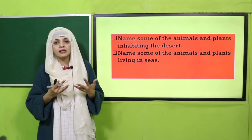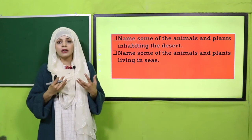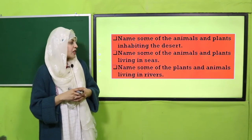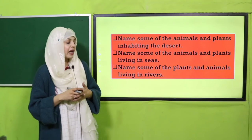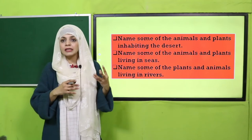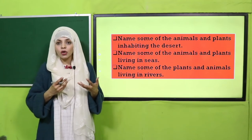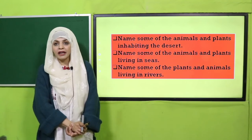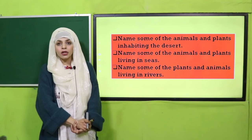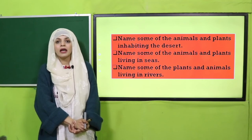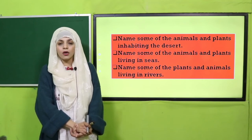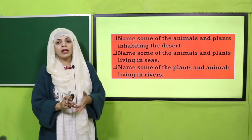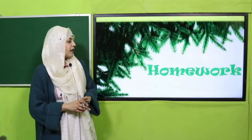Now name the plants and animals living in the sea. Octopus, fish, shark - these are the animals. Plants: sea grass and different types of other plants like mangroves grow there. Very good! Now quickly tell me: name some plants and animals living in rivers. Sea has salty water and rivers have fresh water with less salt. Animals: trout and salmon. Plants: river grass type plants grow in rivers.